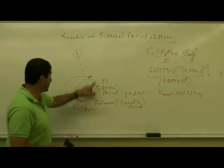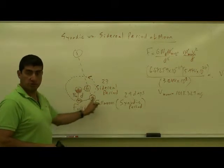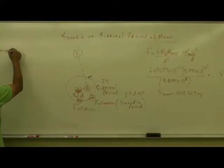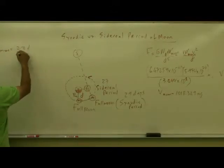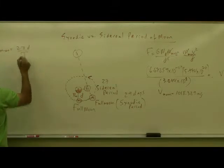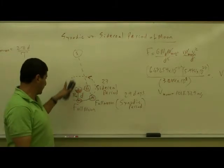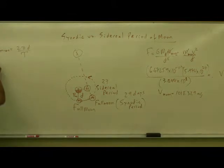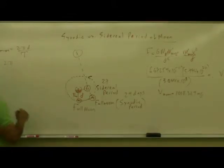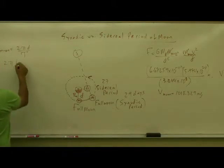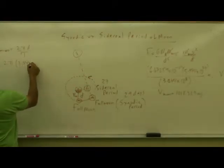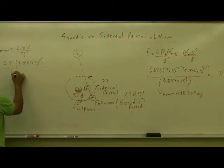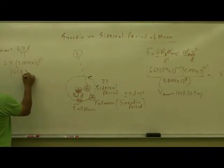Now, if I want to know how many seconds it takes the Moon to go around, you put velocity of the Moon is equal to 2 pi D over period. Because the circumference of the distance that goes around 2 pi D, so the period is going to be 2 pi D, and D is equal to 3.844 times 10 to the 8 divided by the velocity 1018.329.